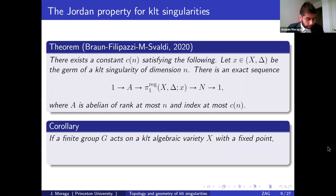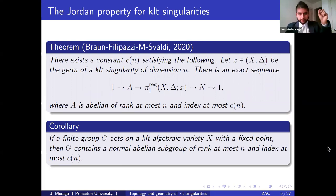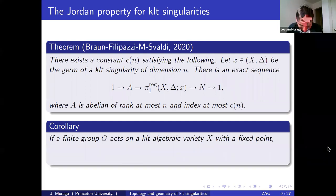A nice corollary: if a finite group G acts on a KLT algebraic variety X with a fixed point, then G contains a normal abelian subgroup of rank at most N and index at most C_N. The proof is really simple using the theorem.